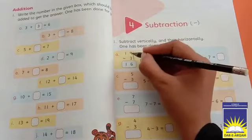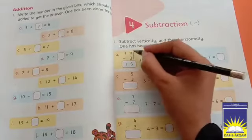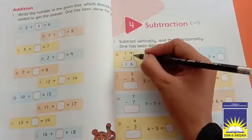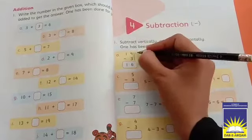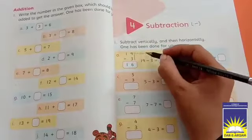First number we subtract from the second number. Above three, which number is written? Nine. Nine is separate here, but together it's nineteen. We will look below nine - there is three. In vertical subtraction, we subtract nine and three this way.